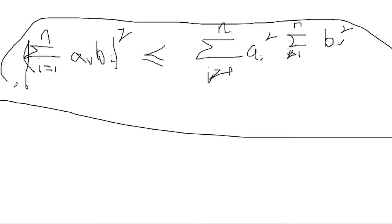Squared is less than or equal to the sum of the square of a_i, and this n, i equals to 1, b_i squared. This is basically the fundamental equation of Cauchy's inequality.